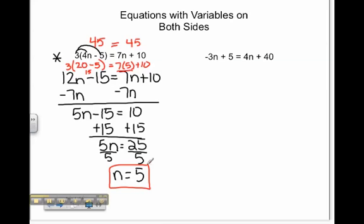Let's try another one. Let's begin this problem by subtracting 4n on both sides of the equal sign. This gives us negative 7n plus 5 equal to 40.